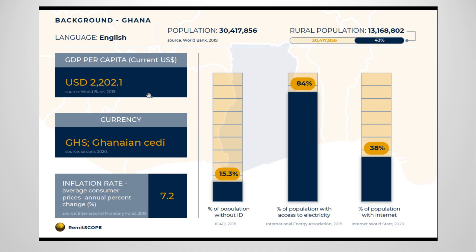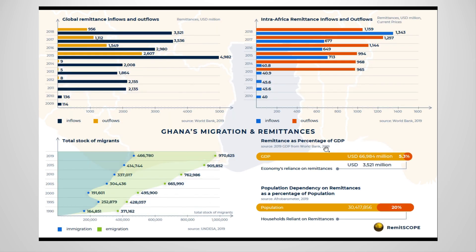To get more detailed information about remittance market conditions and regulations, we have to take a deep dive. These documents start out similarly to the country reports with demographic information about the population, including GDP per capita, electricity and internet access, and inflation. Here we see that while 84 percent of the population has access to electricity, only 38 percent have internet access, which is a necessary component of electronic banking. Moving down, we see remittance inflows and outflows again, but separated by global and intra-African flows this time. We can also see how much of Ghana's GDP is composed of remittance funds — 5.3 percent as of 2019.